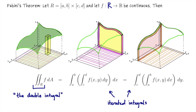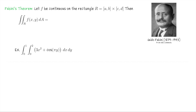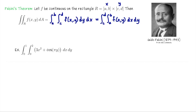Let's do some examples. Fubini's theorem says that for a continuous function on the rectangle [a,b] × [c,d], the double integral of F over that rectangle can be practically calculated as two iterated integrals: either first integrate F with respect to y from c to d and then with respect to x from a to b, or the reverse — integrate first with respect to x from a to b and then with respect to y from c to d.